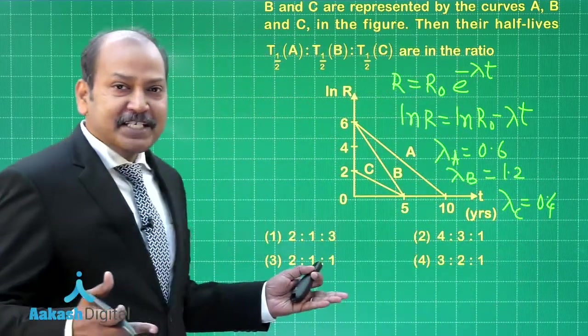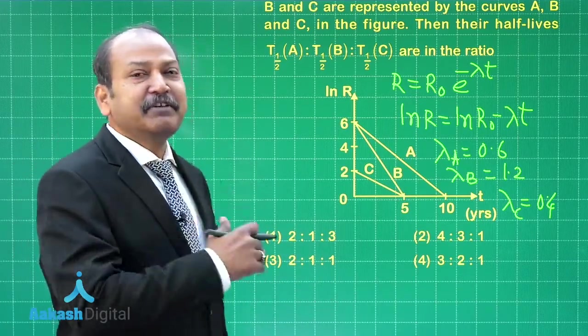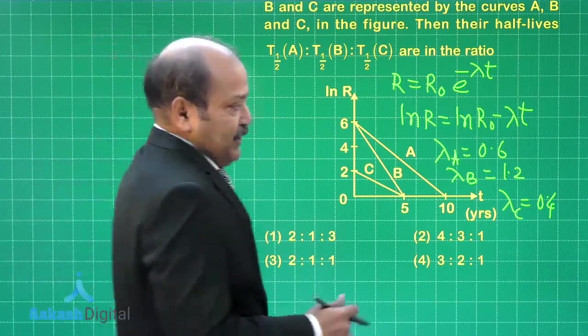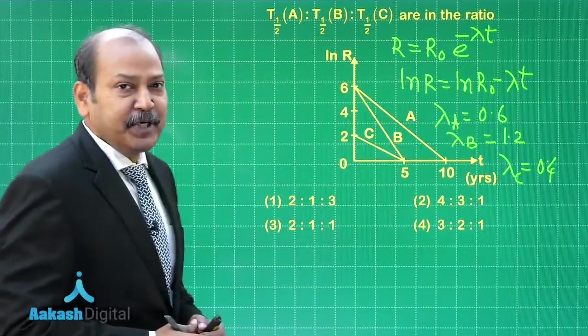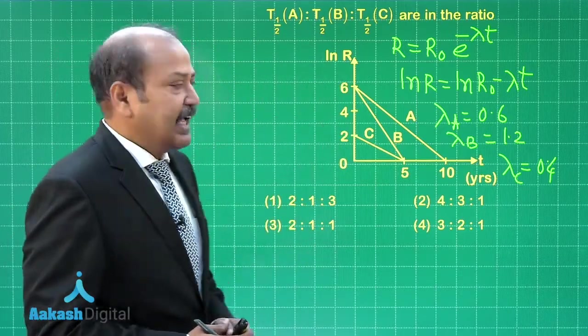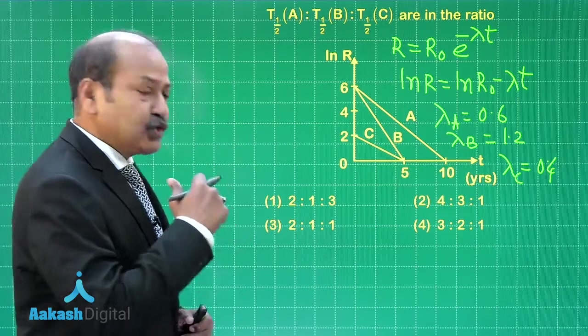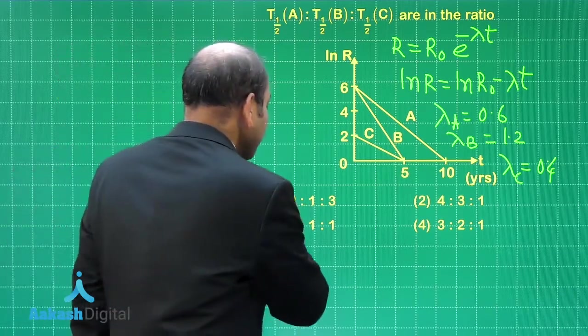We have all the lambdas, and the half-life is ln 2 divided by lambda. So with that we can easily find the ratios between the half-lives of A, B, and C, and that in fact is coming out as 2 is to 1 is to 3. I hope the solution is absolutely clear.